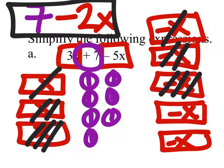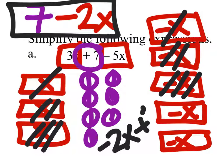If you had written it as negative 2x plus 7, that would be okay as well.